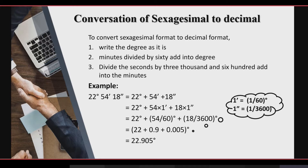We convert 54 minutes into degrees. One minute is equal to 1/60 degrees, so 54 minutes equals 0.9 degrees. Then we convert 18 seconds into degrees. One second is equal to 1/3600 degrees, so we multiply 18 by 1/3600 degrees, which gives us 0.005 degrees.